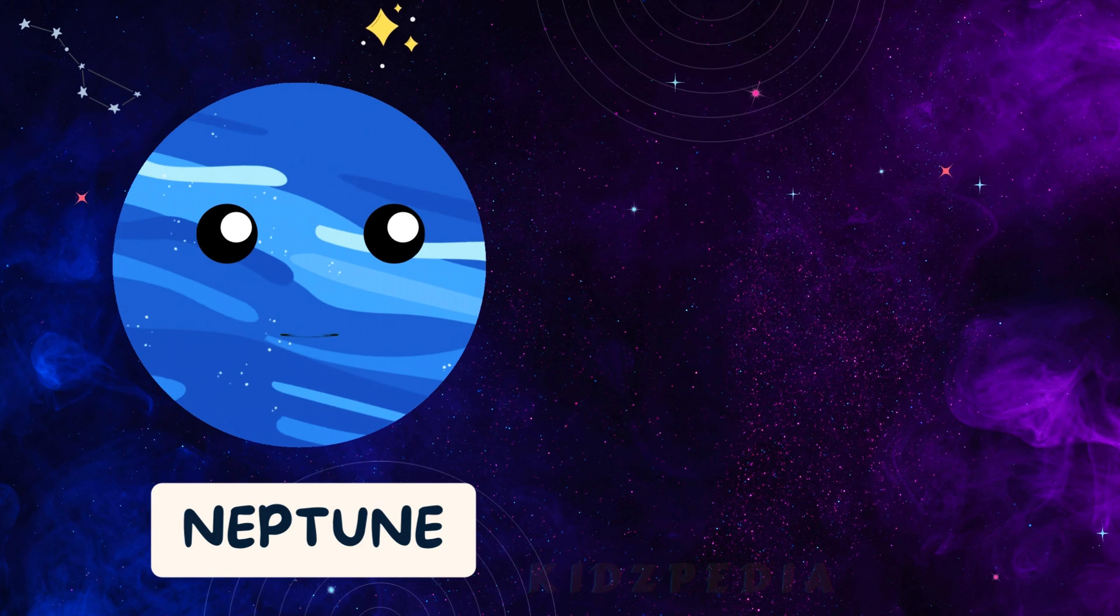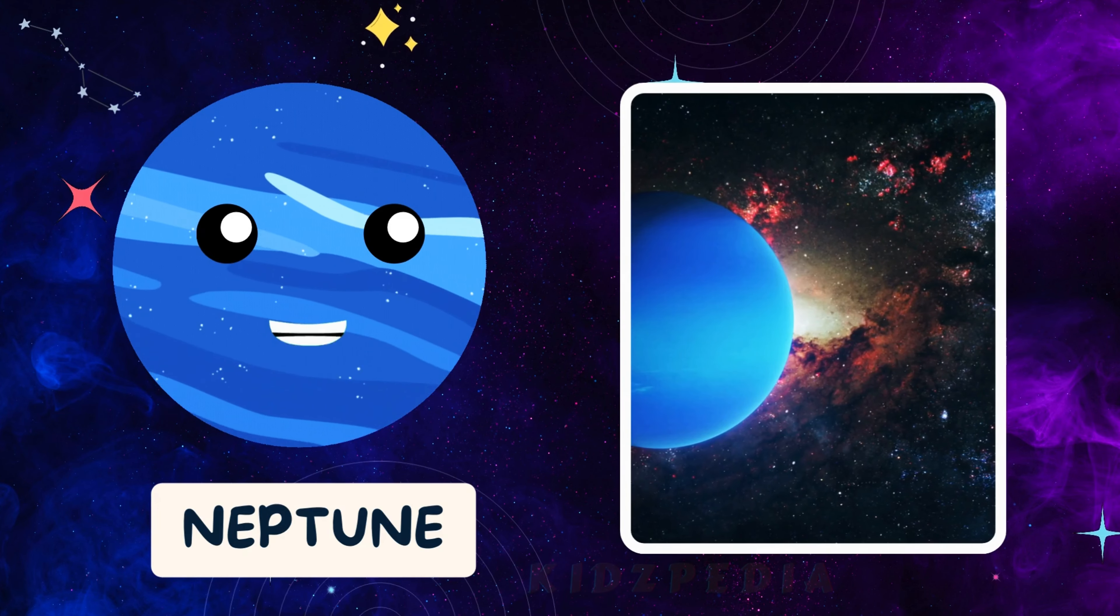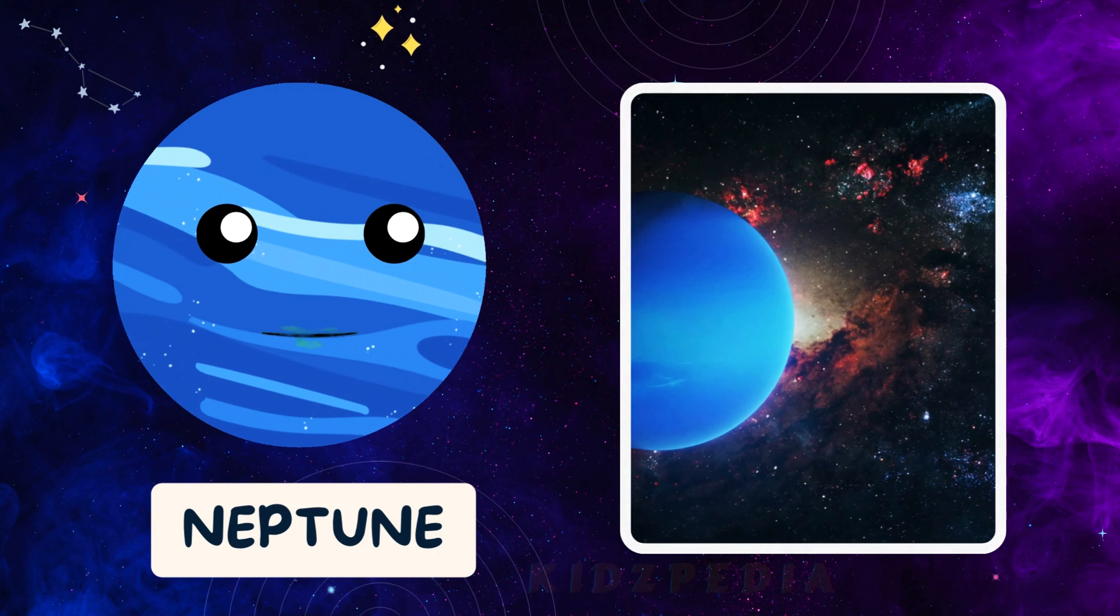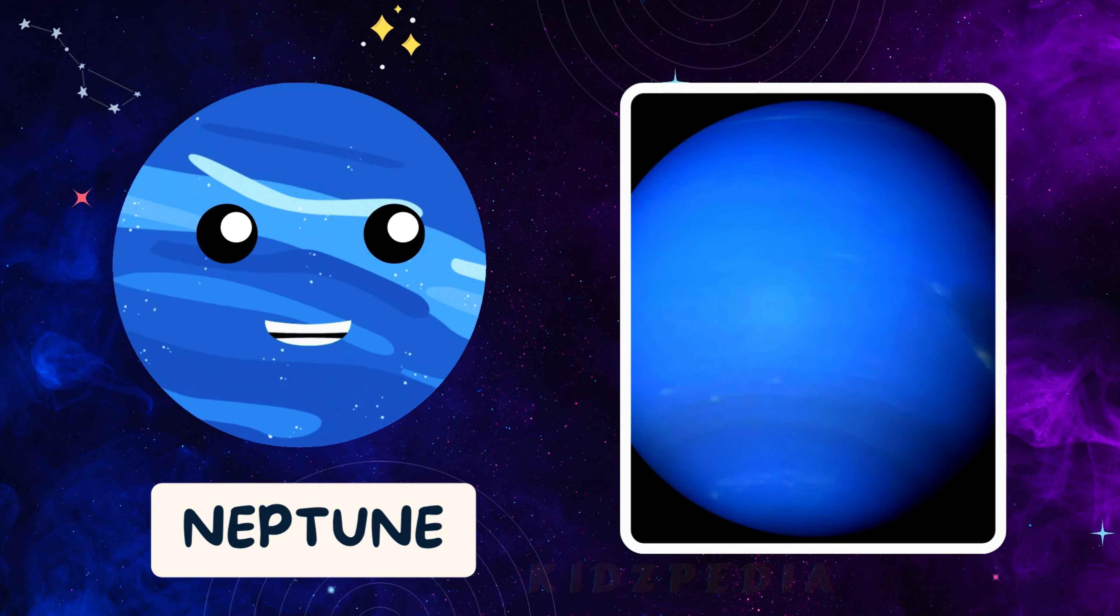Hi, kids. I'm Neptune, the eighth and farthest planet from the sun. I'm a deep blue planet and have some of the fastest winds in the solar system.